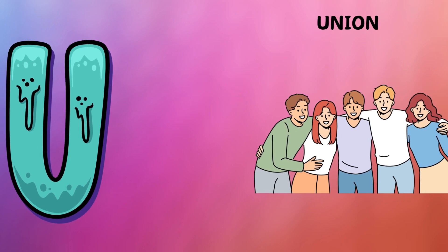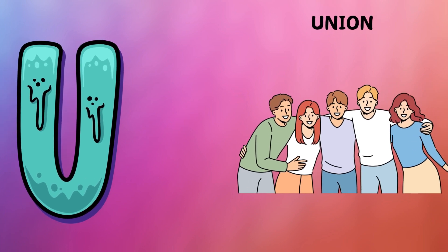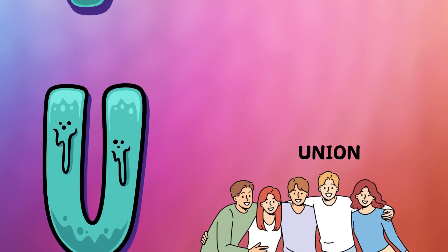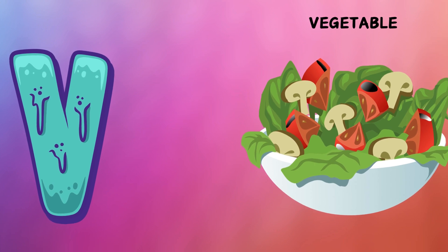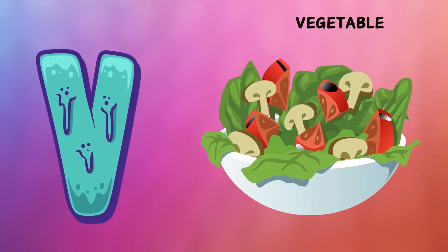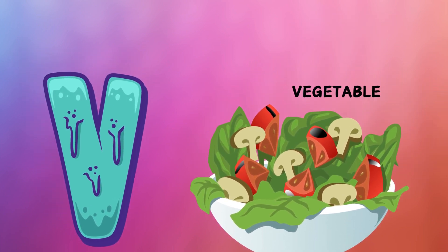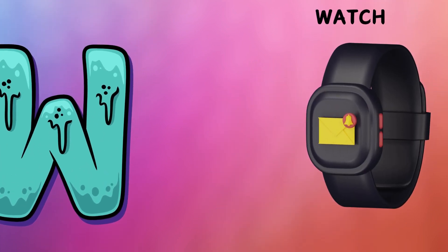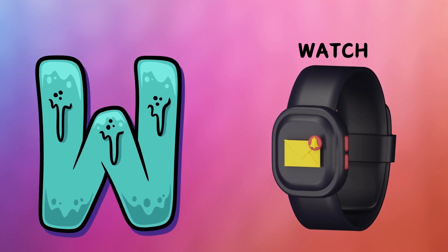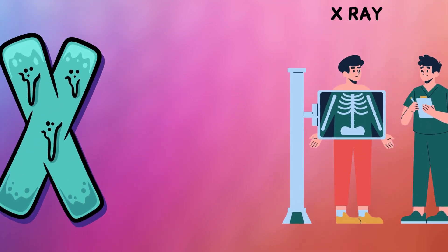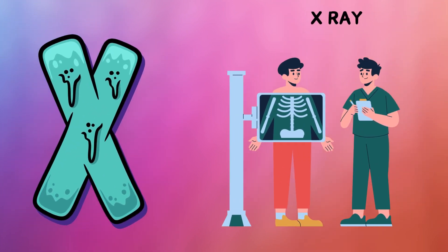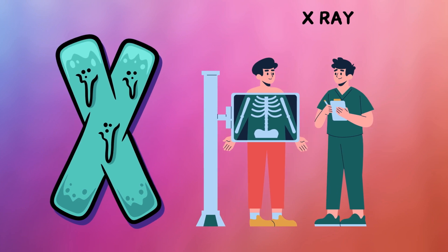U is for union, a-a-union. V is for vegetable, v-v-vegetable. W is for watch, w-w-watch. X is for x-ray, z-z-x-ray.